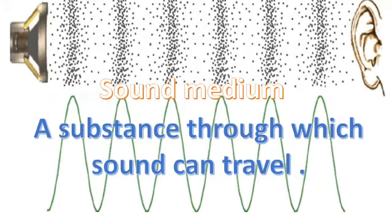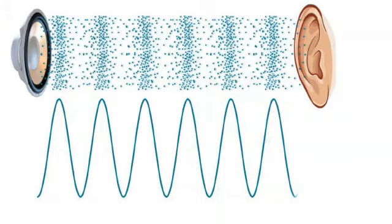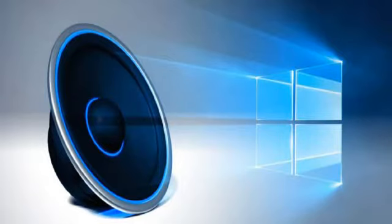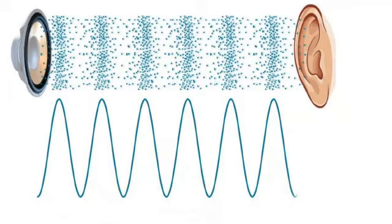A substance through which sound can travel is called a sound medium. It can travel through air, water, and some solid materials. Sound can travel faster through solids than air. It depends on how easily a substance vibrates.